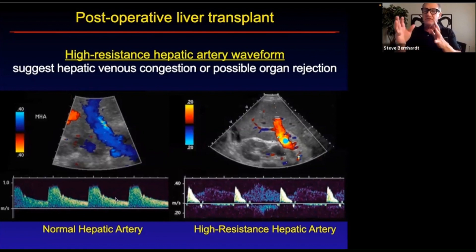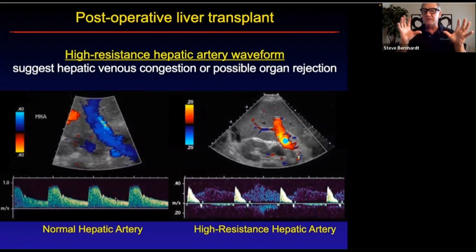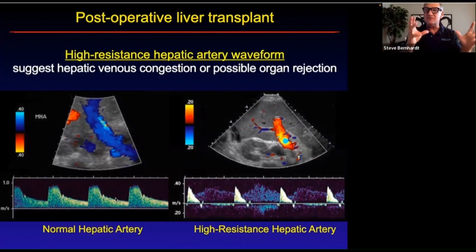They're looking at the flow in these vessels, and at the same time they're looking at the liver chemistries. Once you give a person a new liver, their chemistry should normalize quite rapidly. So having good arterial flow into the liver plus these liver enzymes normalizing together suggest a healthy transplant.